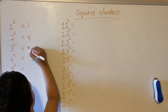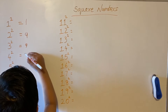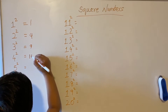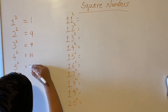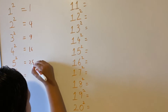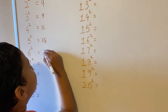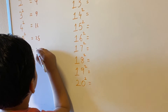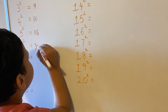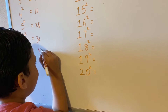Two square is nine. Four square is sixteen. Five square is twenty-five. Six square is thirty-six. Seven square is forty-nine.